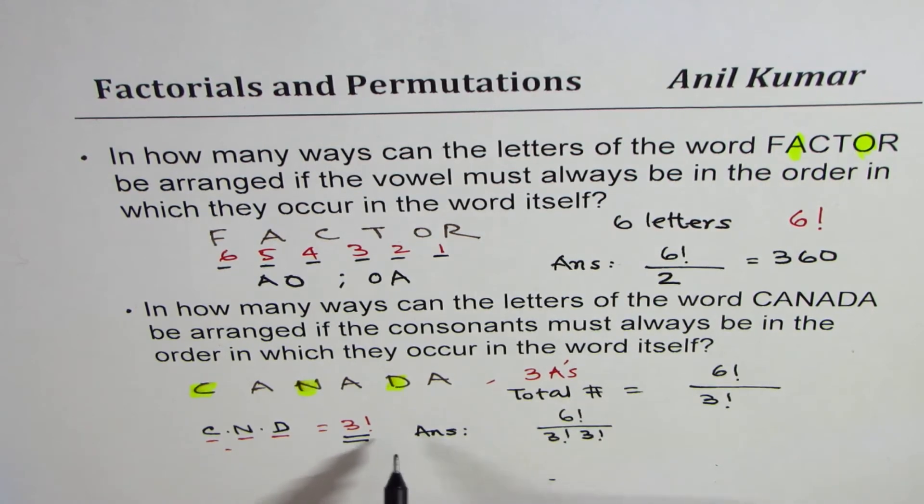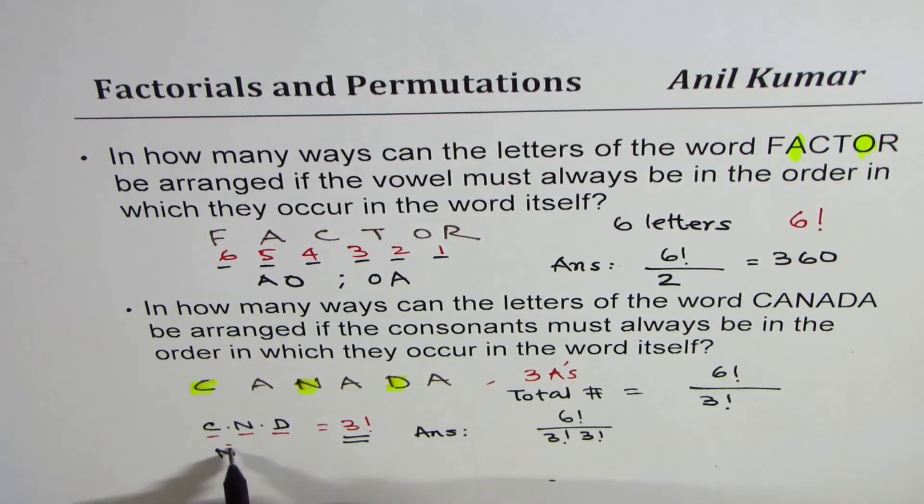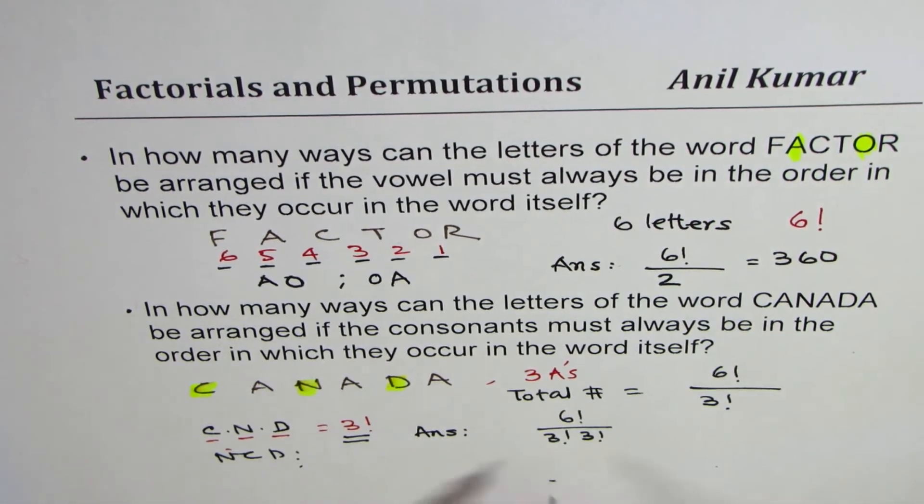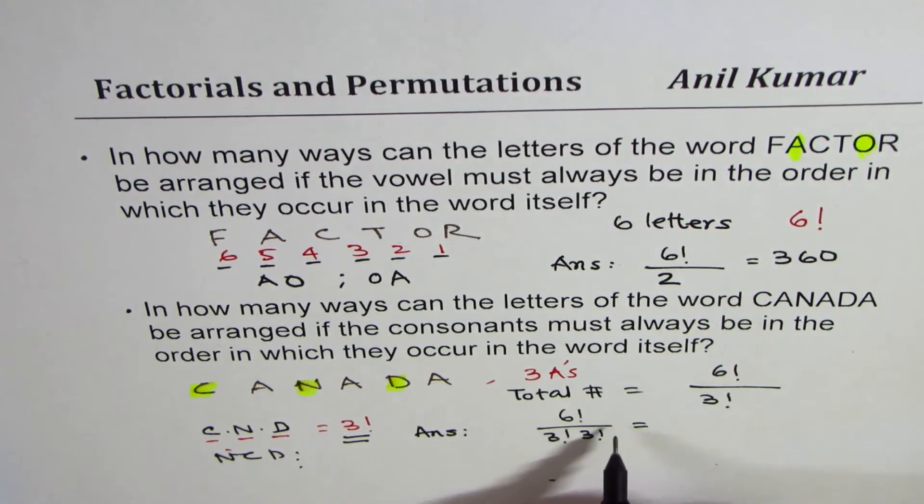We want only the one in which C, N, D comes in this order. We do not want N, C, D, and so on. That's what we mean. So the answer will be 6 factorial divided by 3 factorial divided by 3 factorial.